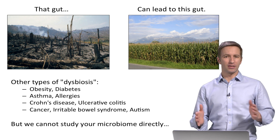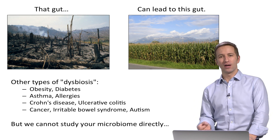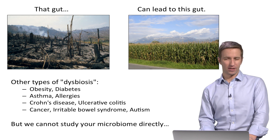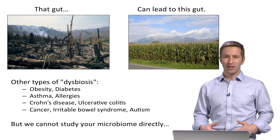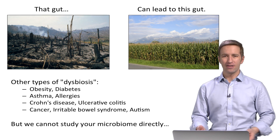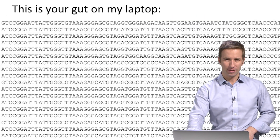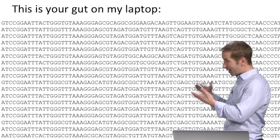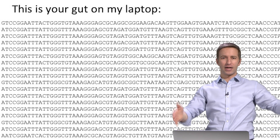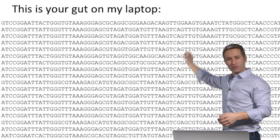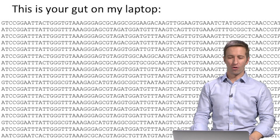One major challenge in studying these is that we can't actually grow most of the bugs in the typical human gut microbiome. As soon as you take them out of the human gut, they become challenging to grow. So what do we do? Instead, we grind up their DNA, run it through a DNA sequencer similar to the ones used to sequence human genomes, and then we get back something that looks like this. This is your gut on my laptop. This is basically how we analyze the data — we take all the bacterial genes, line them up, and then look for columns that have subtle variations in them to figure out which species each DNA sequence came from or which gene it's from. Then we can start to determine which bugs are associated with each disease and what they might be doing.